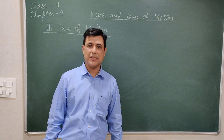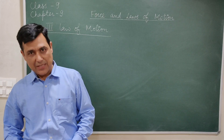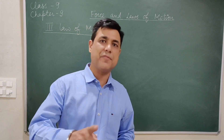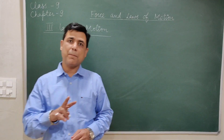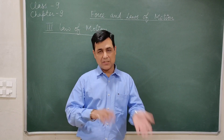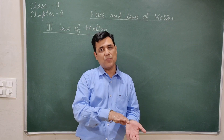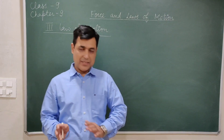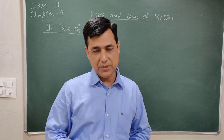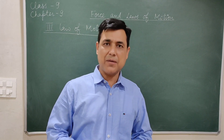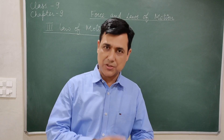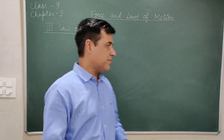To every action there is an equal and opposite reaction. This action and reaction always act upon two different objects. That means there should be a pair of objects — one applying the action and the other showing the reaction. It cannot be applied on one object. It is always applicable on two objects, so there should be a pair: an action-reaction pair.